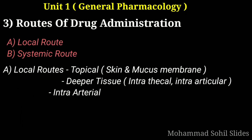Now coming to the third topic, that is route of administration. A route of administration in pharmacology and toxicology is the path by which a drug, fluid, poison, or other substance is taken into the body. Routes of administration are generally classified by the location at which the substance is applied. Common examples include oral and intravenous administration. There are two types of route: first is local route and second is systemic route. The choice of appropriate route depends on both drug and patient-related factors.